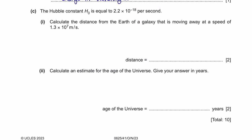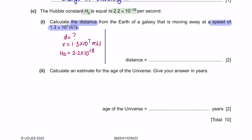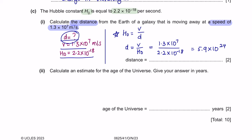Question C: The Hubble constant H₀ = 2.2 × 10⁻¹⁸ per second. Calculate the distance from Earth of a galaxy moving away at a speed of 1.3 × 10⁷ m/s. The formula is: Hubble constant = velocity ÷ distance, so rearranging gives d = v ÷ H₀. Substituting: d = (1.3 × 10⁷) ÷ (2.2 × 10⁻¹⁸) = 5.9 × 10²⁴ metres.